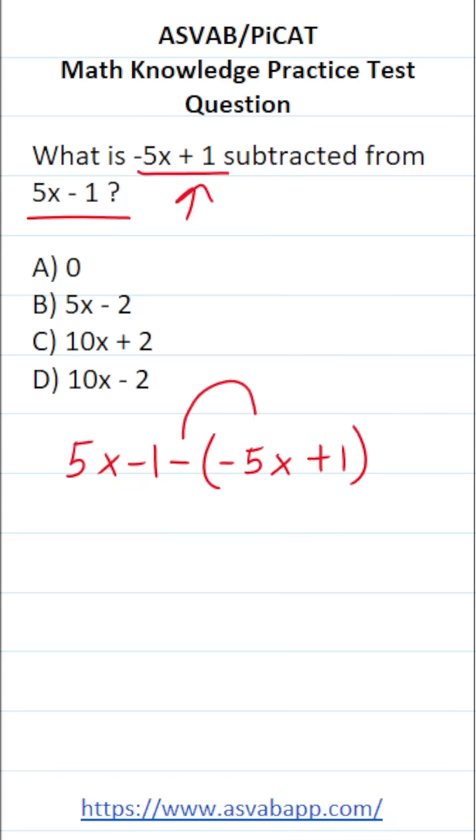Because this subtraction sign, which we're going to treat as a negative sign, is going to be distributed to both terms in this second polynomial. So this becomes 5x minus 1.